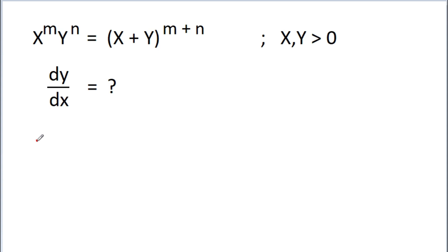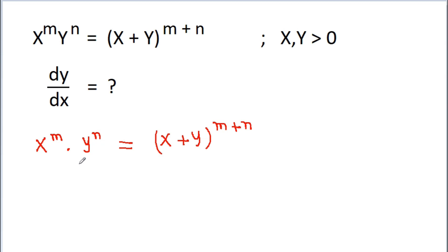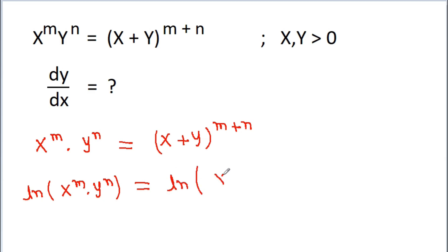We have given that x to the power m into y to the power n is equal to x plus y to the power m plus n. Now if we take natural log on both sides, then we get ln of x to the power m into y to the power n is equal to ln of x plus y to the power m plus n.